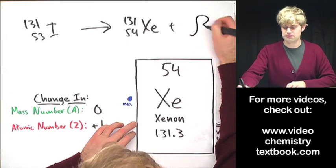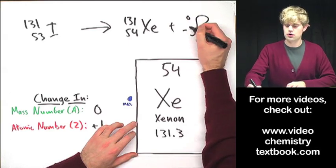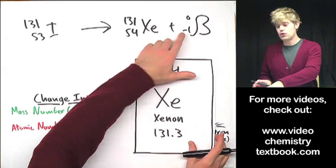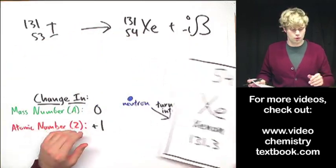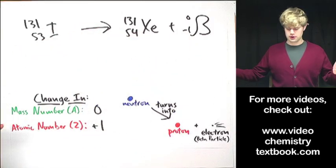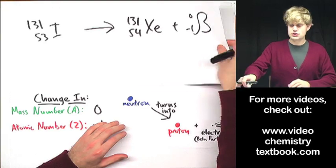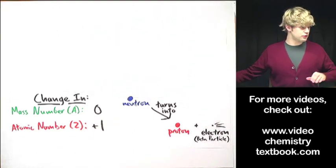And then to write the complete decay, you also want to include your beta symbol or your electron symbol, whatever your teacher wants you to do. Let's do one more that's kind of the reverse approach.